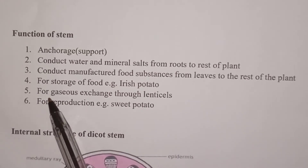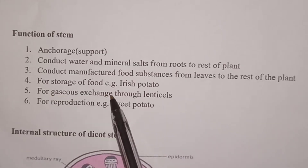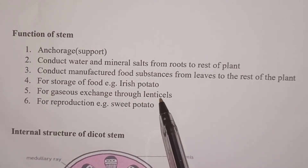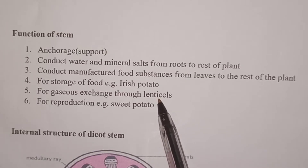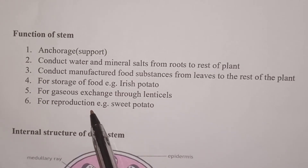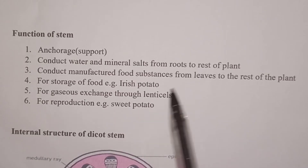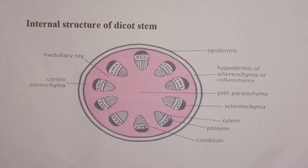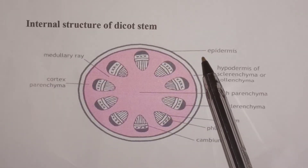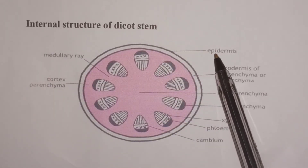Number four, the stem is used for storage of food in some plants, for example the Irish potato. Number five, it is used for gaseous exchange in some plants, and this happens through the lenticels — tiny holes found in old woody stems. Number six, it is used for reproduction, for example the sweet potato.